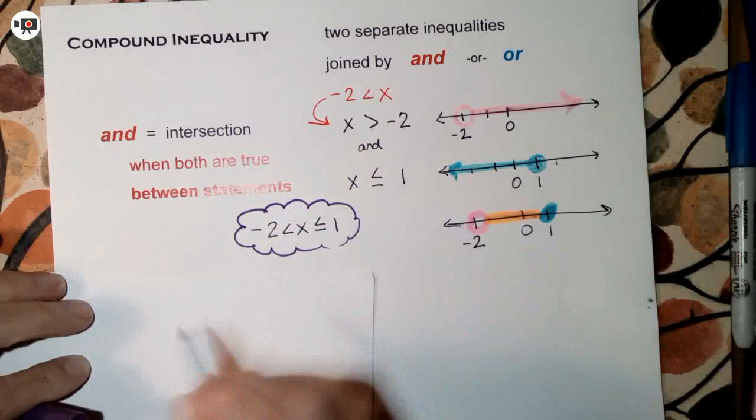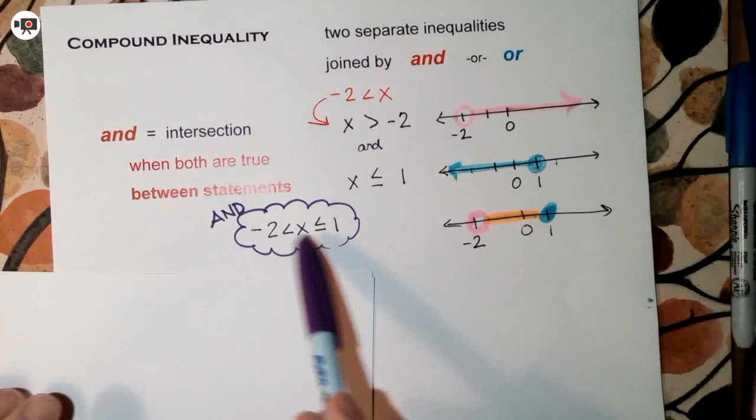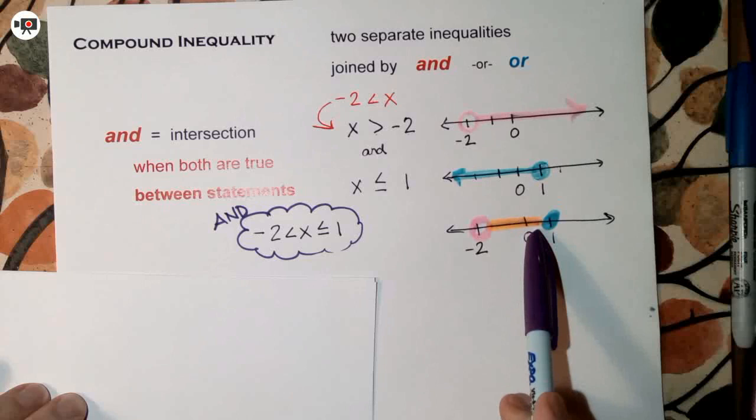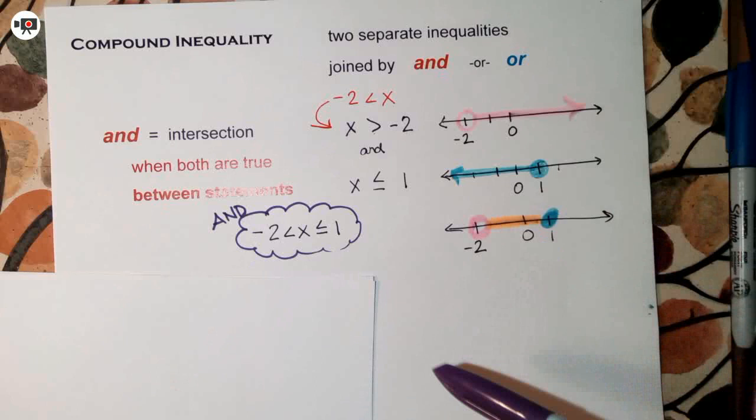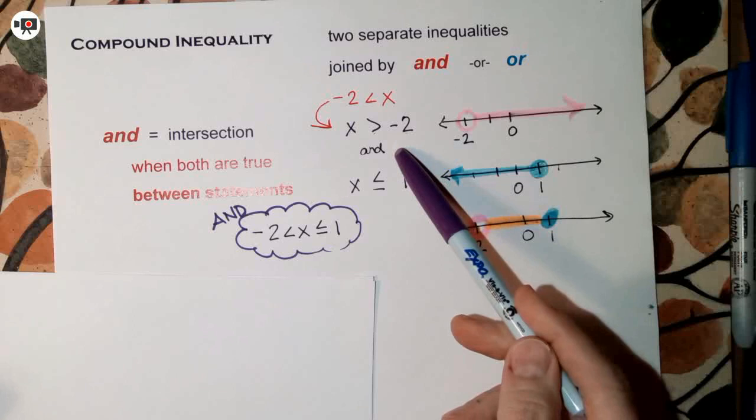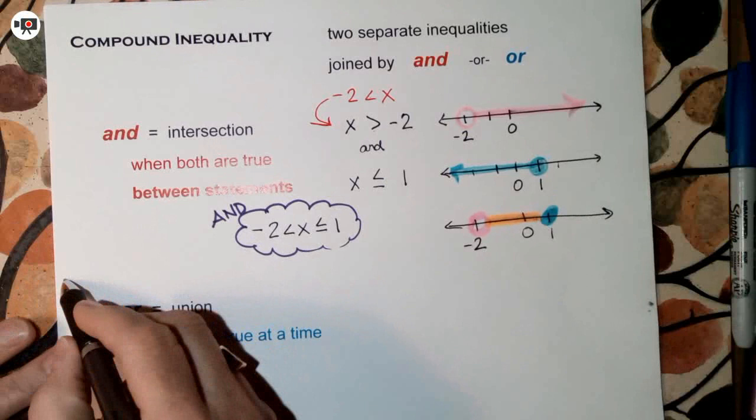This combined form is how AND statements are often written — it clearly shows x is between negative 2 and 1. You can write it this way, or as two separate inequalities joined by the word AND. This is the AND, or intersection, form.